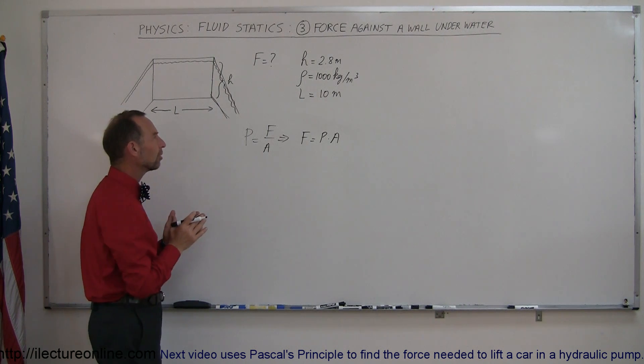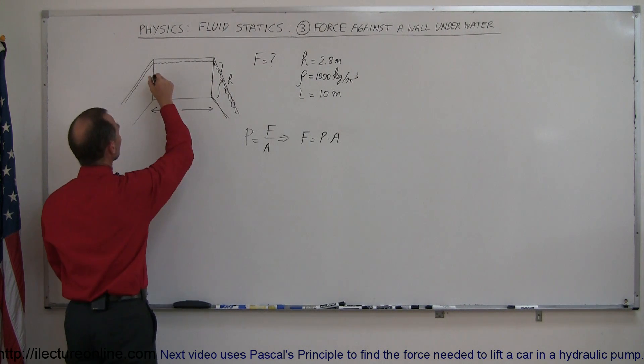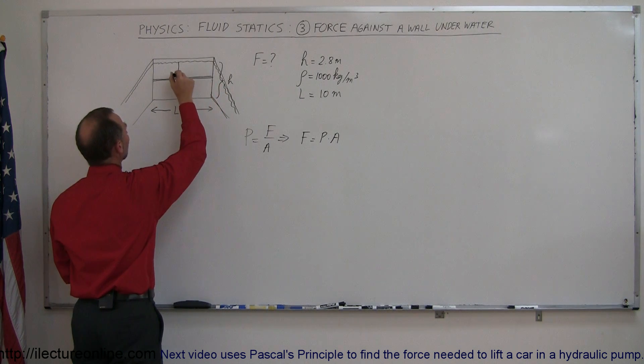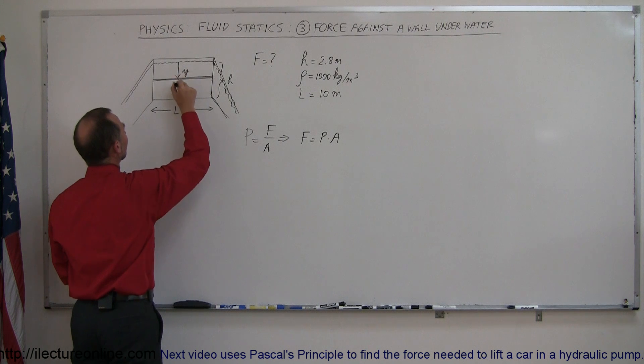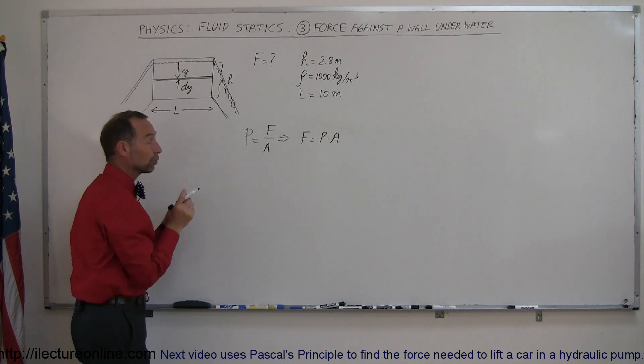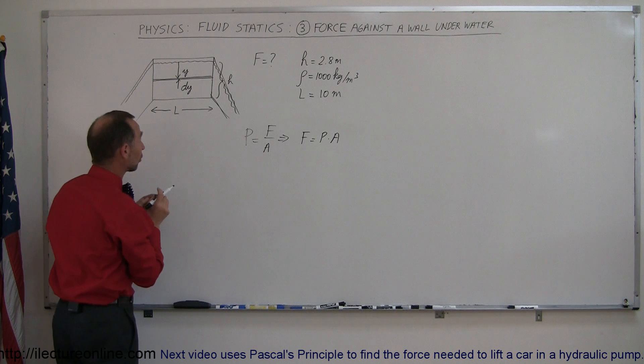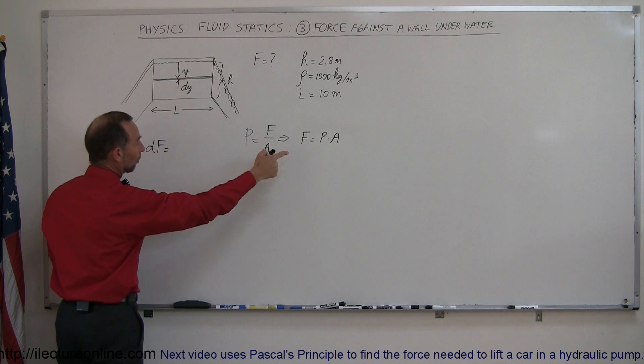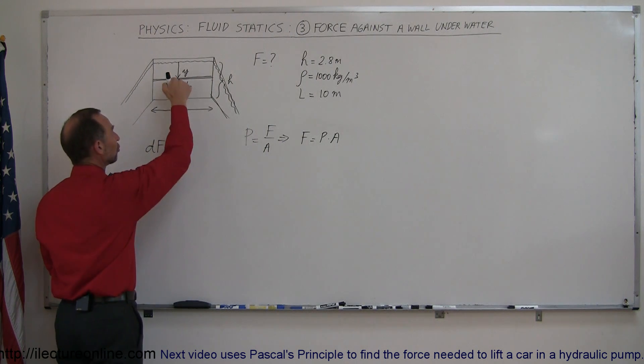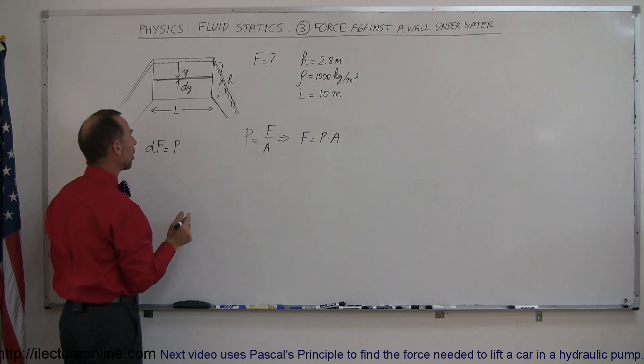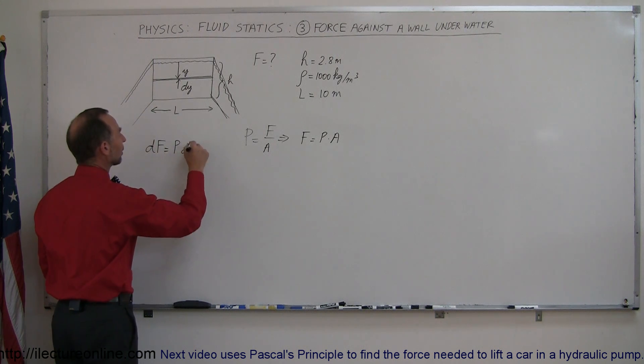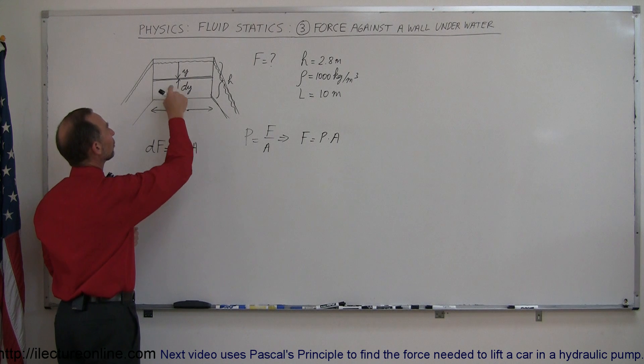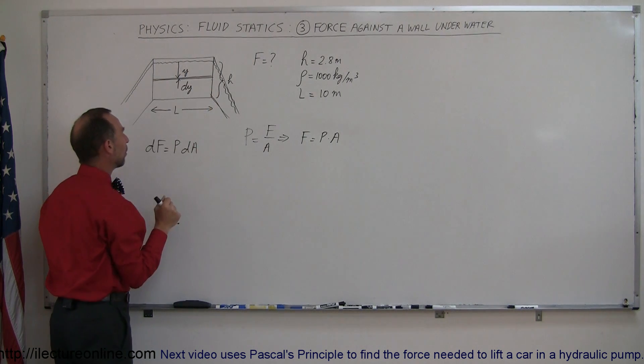So the best way to do that then is to imagine a small little strip against a wall that is at a depth of y below the surface and has a width equal to dy. Therefore the force on that strip alone, we can call a small amount of force df, and that small amount of force is equal to the pressure at that depth, which wouldn't change because the thickness is so small, times the area of that strip, and let's call that area a small little dA. And of course the dA is simply equal to the length L times the width dy.